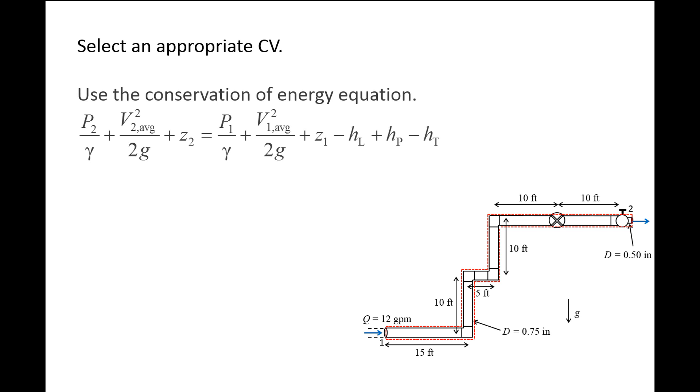Next, we apply the conservation of energy equation for steady flows through a control volume, using the subscript 2 for the outlet terms and the subscript 1 for the inlet terms. The total head at the outlet equals the total head at the inlet minus the head loss plus the pump head minus the turbine head. Since the outlet is a free jet, it experiences atmospheric pressure, which is zero gauge. There is no pump or turbine, so the pump head and turbine heads become zero as well.